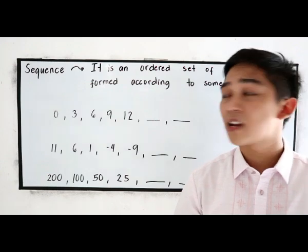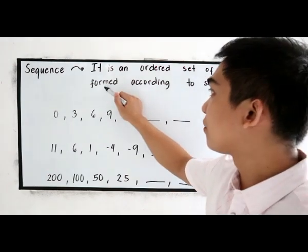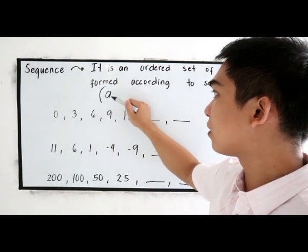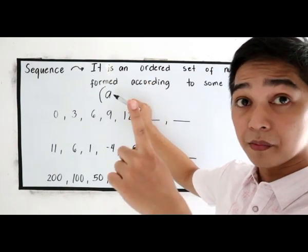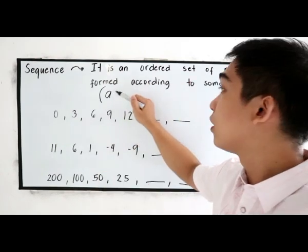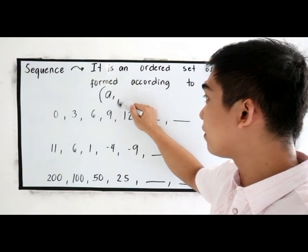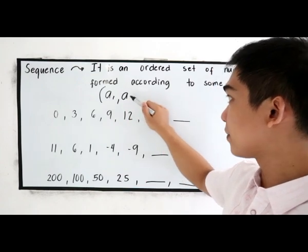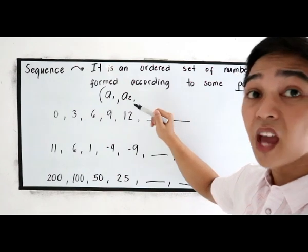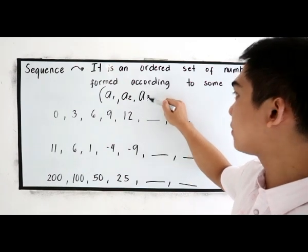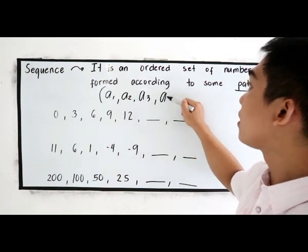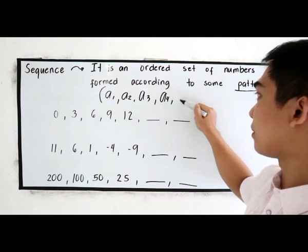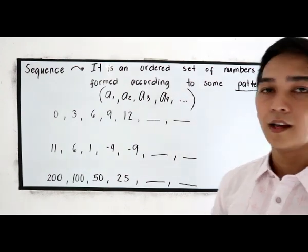And that is denoted by, for the first term we have A1 for the first term, A2 for the second term, A3 for the third term, A4 for the fourth term, and so on.